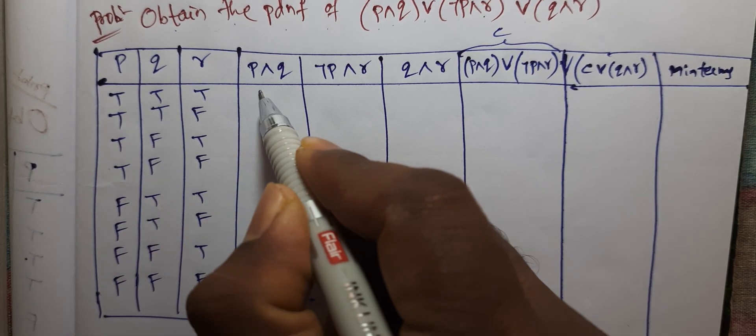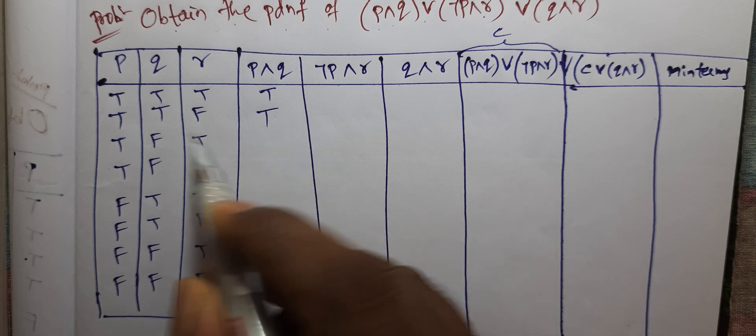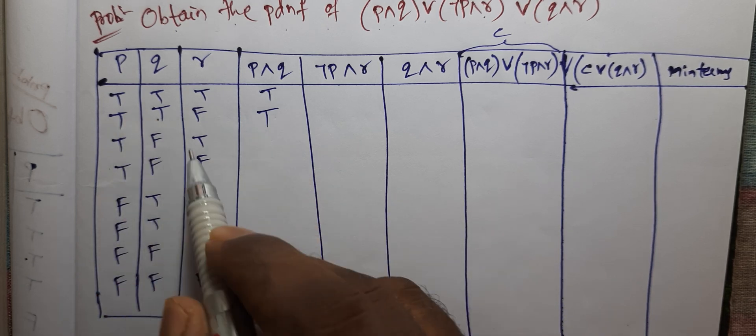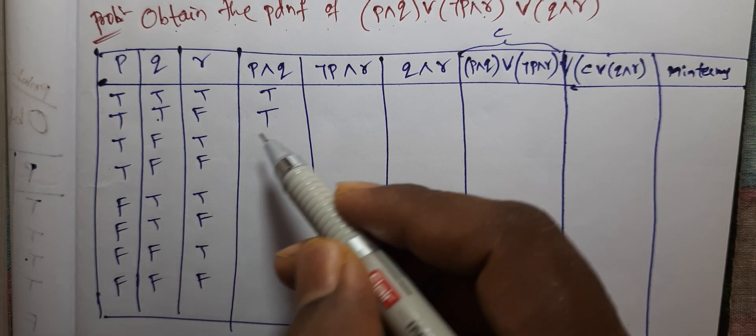P and Q — any two statements true means the result is true. If any one remaining is false, the result is true.